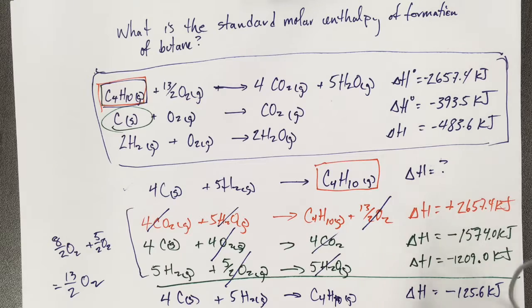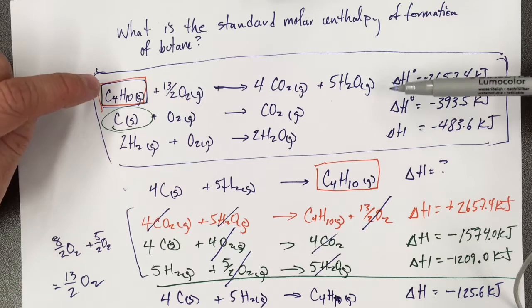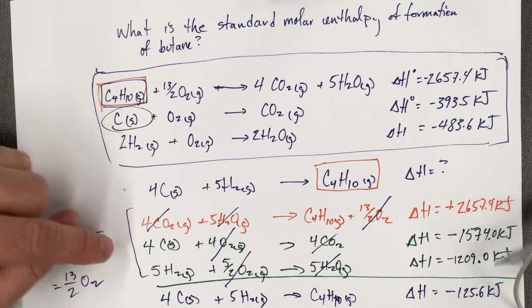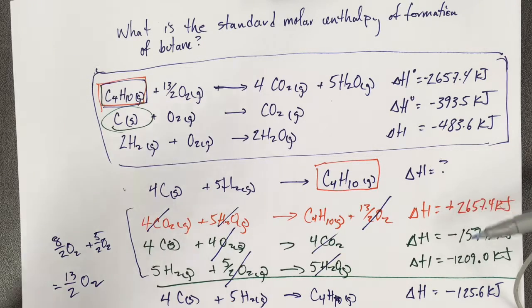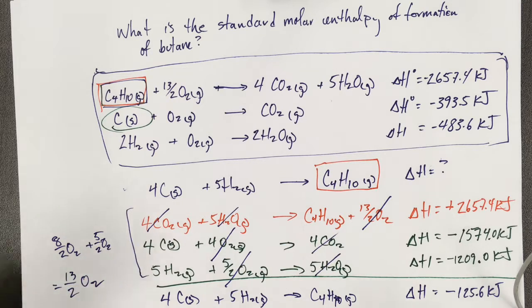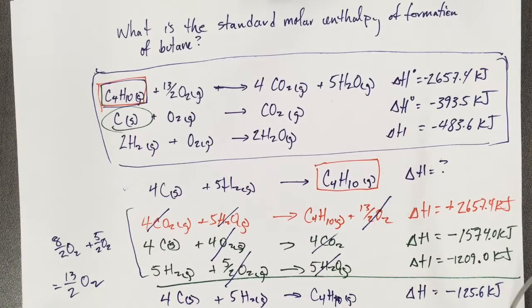And essentially, all I've done is written my reaction that I want to prove, then rearranged each of the reactions given to me, adjusting the energy for what I do. If I flip it, I change the symbol. If I multiply through by a number, then I multiply the energy by that same number. And then I cancel everything out that is the same in the reactants and products, and I rewrite the equation.